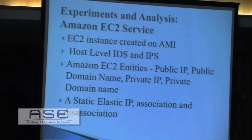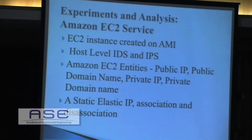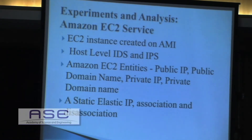Amazon also provides an option for an elastic IP, which is a static IP associated to your account rather than to your EC2 VM instance. You can associate that static IP to any instance, but after migration there is a chance it will become disassociated, so you have to return and re-associate it.